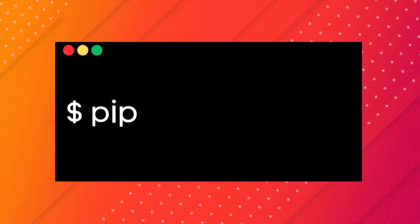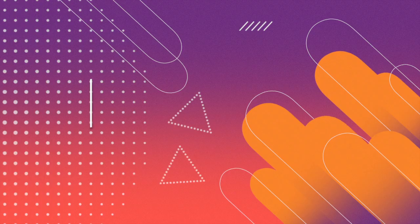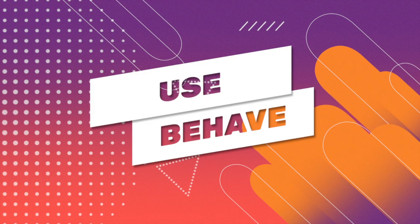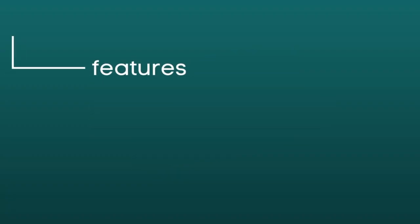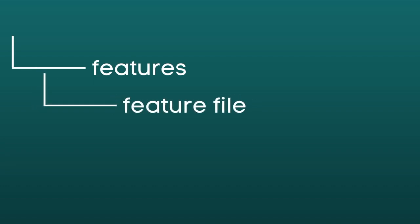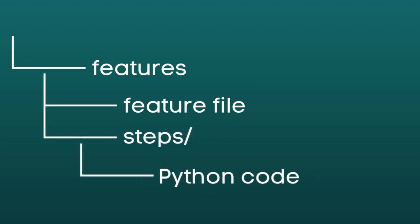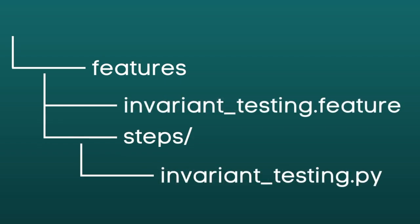For those who prefer PyTest, I have included the test written in PyTest in the description below. To install Behave, type 'pip install behave'. To use Behave for invariant testing, we will create two files inside the features directory. The first is a feature file written by your business analyst or stakeholders. The second is a steps directory with Python step implementations for the scenarios. In this example, we will name our feature file 'invariant_testing.feature' and our step file 'invariant_testing.py'.